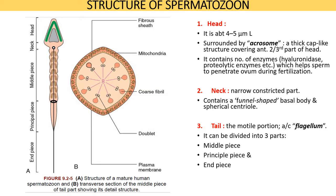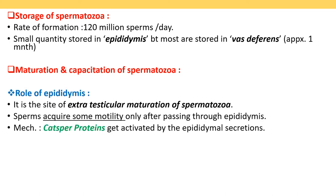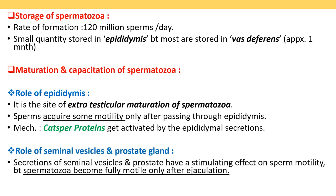The rate of formation of sperms is about 120 million sperms per day. A small quantity are stored in the epididymis, but most are stored in the vas deferens. The epididymis plays an important role in the maturation of sperms after they are released from the seminiferous tubules. Sperms acquire some motility only after passing through the epididymis. Secretions of seminal vesicles and prostate gland have a stimulatory effect on sperm motility, but sperms become fully mature and motile only after ejaculation by the process of capacitation.